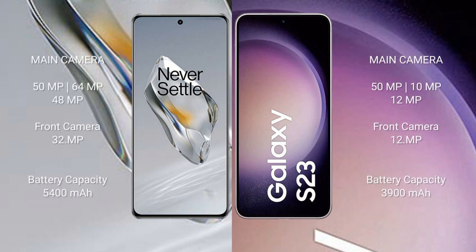OnePlus 12 has a rear triple camera setup: 50 megapixel plus 64 megapixel plus 48 megapixel, and a 32 megapixel front camera. Samsung Galaxy S23 has a triple camera setup: 50 megapixel plus 10 megapixel plus 12 megapixel, and a 12 megapixel front camera.